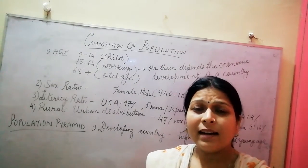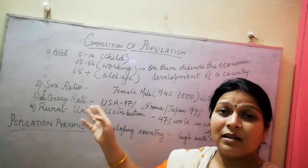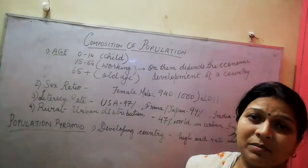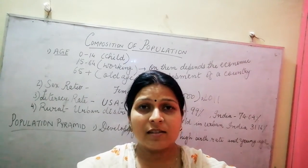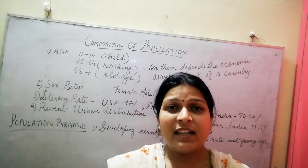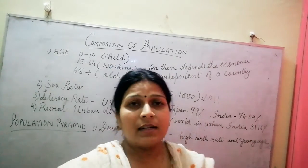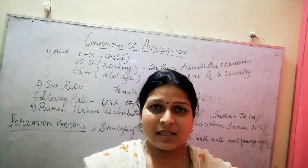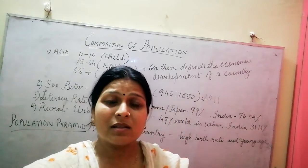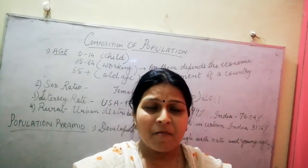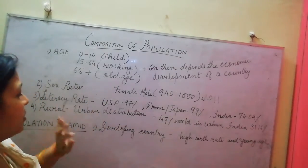Literacy rate refers to how many people can read and write. In developed countries like the USA, it is 97 percent. France and Japan have 99 percent literacy rate. In India, we have only 74.04 percent literacy rate. Kerala has the highest literacy rate, along with Mizoram, while Bihar has only about 63 percent literacy rate.